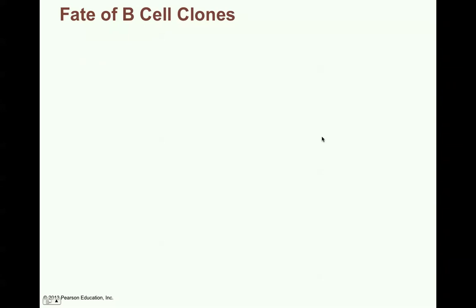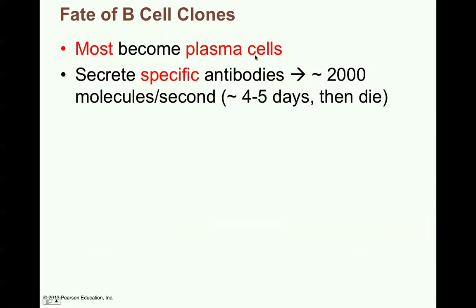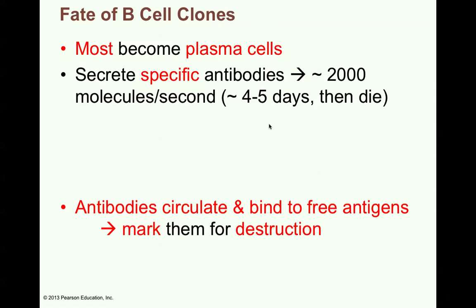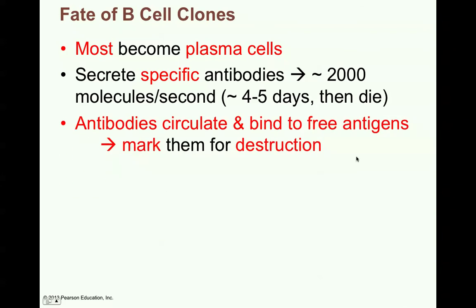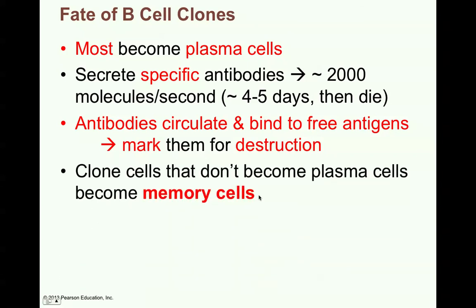B lymphocytes multiply and differentiate into effector cells — those that actually produce the antibody. These are called plasma cells. Most B cells become plasma cells. These plasma cells secrete specific antibodies, about 2,000 molecules per second for about 4 to 5 days, and then they will die. The antibodies circulate and bind to free antigens and mark them for destruction. The clone cells that don't become plasma cells stay there to become memory cells, forming a memory of the exact encounter and the antibody that had been produced.